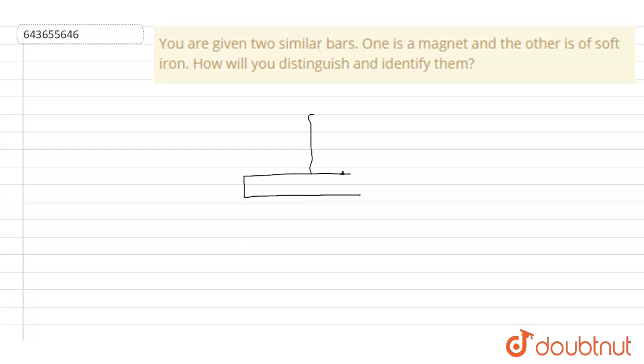We will suspend both bars like this. The one which always faces in the north-south direction is the bar magnet, and the other is the soft iron bar. The one which always points toward the north-south direction is a bar magnet, and the other one is soft iron. This is the experiment by which we can distinguish between them.